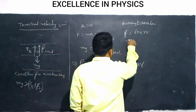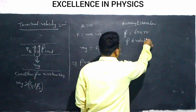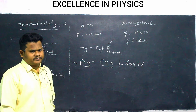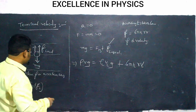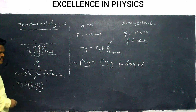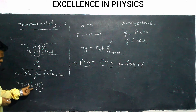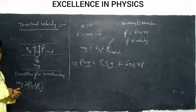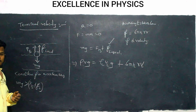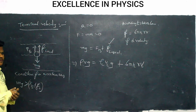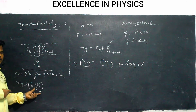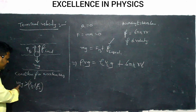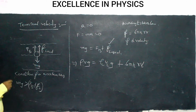Friction is directly proportional to the velocity of the body — if velocity increases, frictional force also increases. Initially, mg is greater than force of buoyancy plus friction, so the body will accelerate. As velocity continuously increases, the viscous drag force increases, so the difference between these two forces decreases continuously.